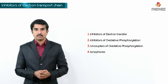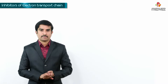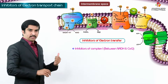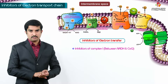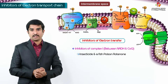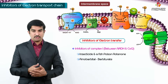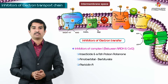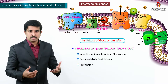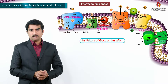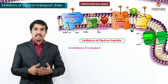First, the inhibitors of electron transfer at Complex I, which is between NADH and coenzyme Q. These are rotenone — an insecticide and fish poison — amobarbital, which is a barbiturate, and piericidin A. All three inhibit Complex I.